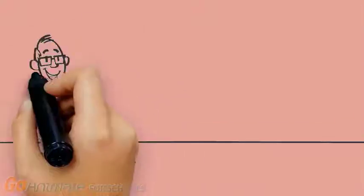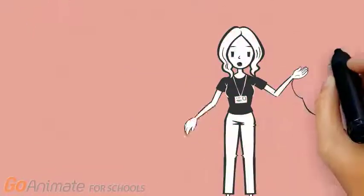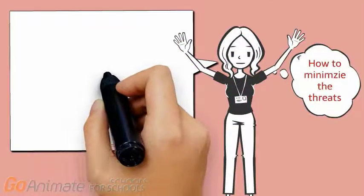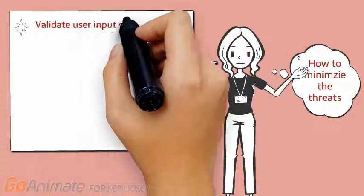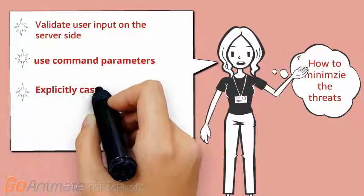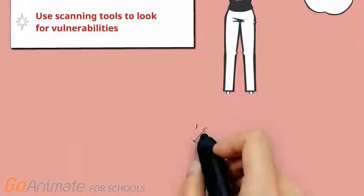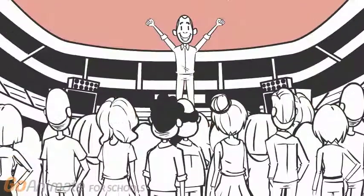So now that we know what a sequel injection attack is and how it works, we can talk about what to do to minimize the threat of an attack. You need to validate user input on the server side, use command parameters, explicitly cast user input, and use scanning tools to look for vulnerabilities in your software.